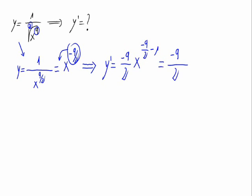Then we have minus 9 divided by 2 times x, minus 9 divided by 2 minus 1. The common denominator would be 2, 2 halves. 1 times minus 9 equals minus 9, and 2 times minus 1 equals minus 2.